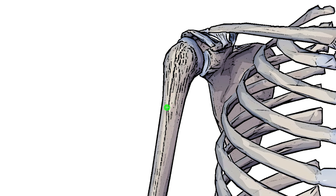Moving on to the long head — it's going to come up here where my mouse is moving, and there's going to be a sort of indentation, like a recess, going down this area here. That's the bicipital groove, and that's where the long head of the biceps brachii tendon is going to travel up through. It then comes over the top and originates on the supraglenoid tubercle of the scapula, just superior to the glenoid cavity.